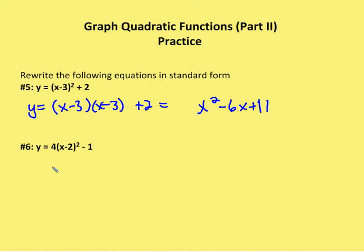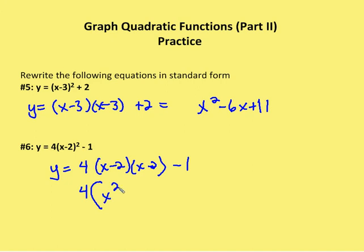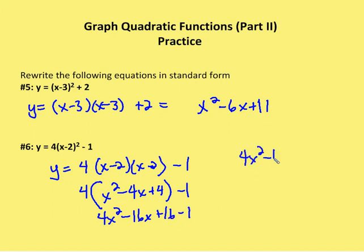For the second one, we multiply 4×(x−2)², squaring x−2 first: 4×(x²−4x+4) − 1 = 4x²−16x+16−1 = 4x²−16x+15. And that's my answer for the last problem.